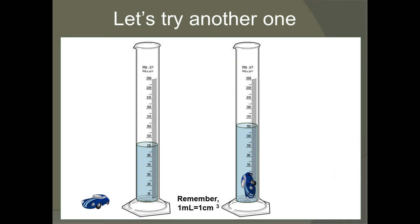Let's try another one, only this time I want you to try it. So, the first thing you need to do is get your starting volume. You're going to read the graduated cylinder before adding the car and get your starting volume. Remember, read it at the bottom of the meniscus. I'm going to give you a few seconds, take a look at the graduated cylinder, and record your starting volume.